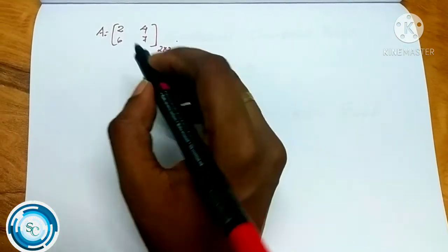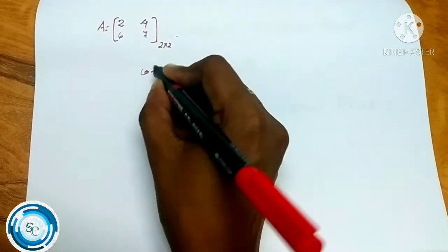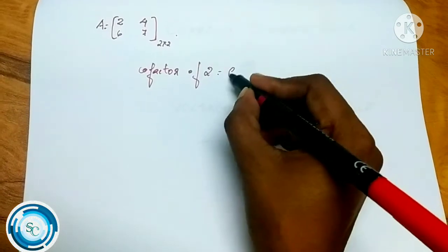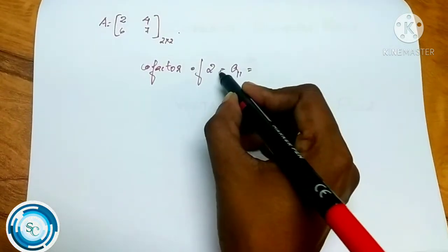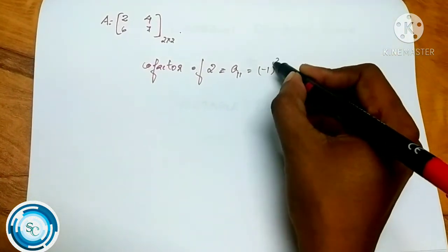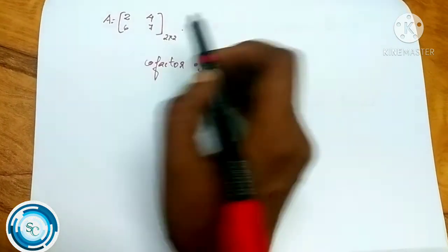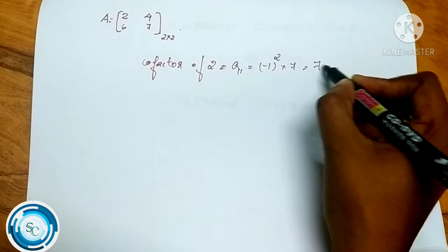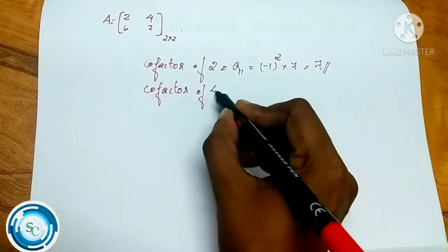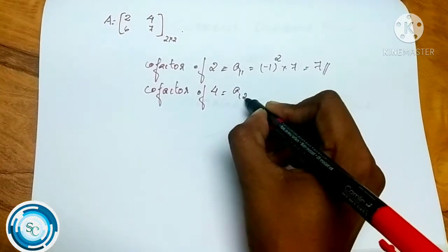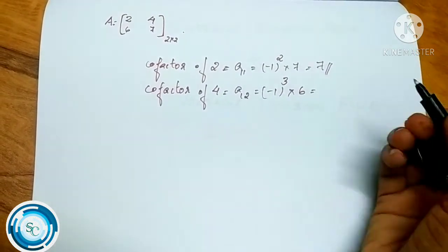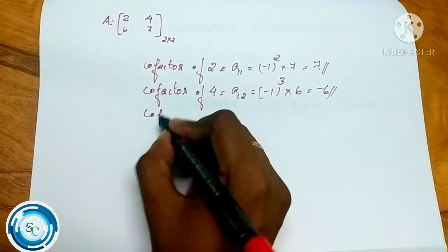Within the cofactor, for the first element a11, the cofactor is equal to minus one raised to the power 1+1, into the minor, which gives 2. The cofactor of element a12 is equal to minus one raised to the power 3, into the minor 4, which is equal to minus 6.